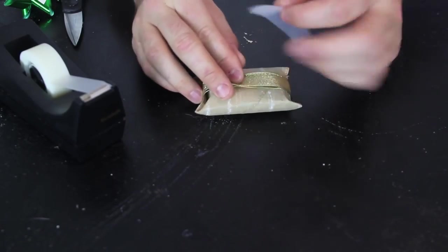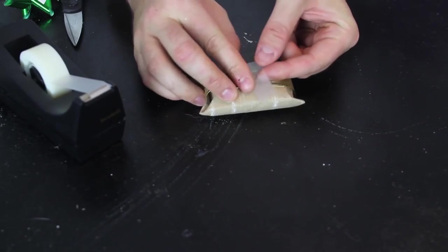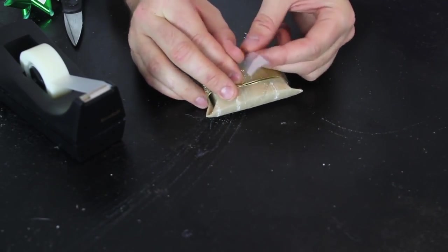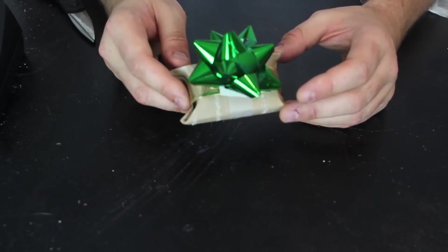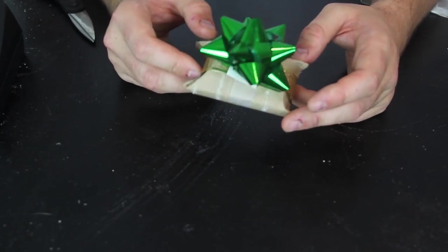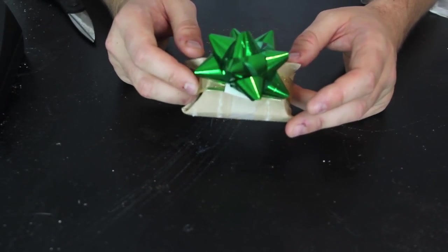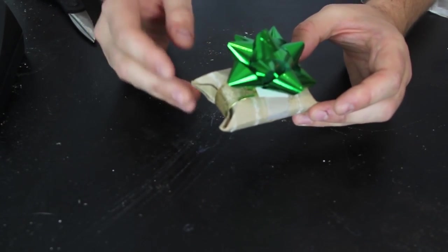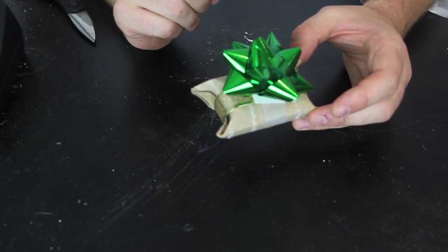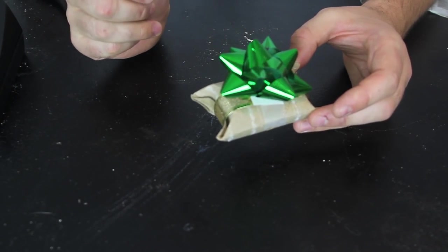Then grab a ribbon, put it like that, put some tape on it to hold it together. And then one of those bows and boom, you got yourself a cute DIY Christmas box. And I'm telling you, they're gonna appreciate it way more that you actually put your own thought into it and wrapped it up yourself and came up with a cool thing like that.